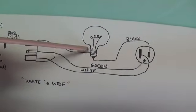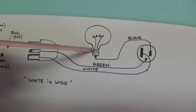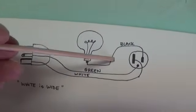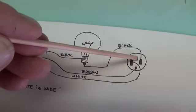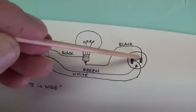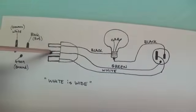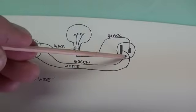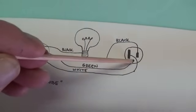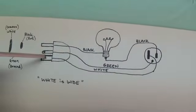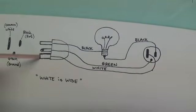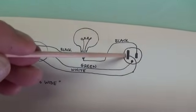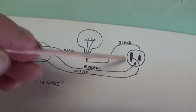This will be through the bulb base that you buy. In my case it's a porcelain one. So you go in one lead of the bulb base and out the other. The black wire will come over here and then go to the narrower of the two receptacle holes. The common is the green wire. It will come around here to the green or common ground hole on our receptacle. And the wide prong is the white wire which goes to the common wide receptacle hole.